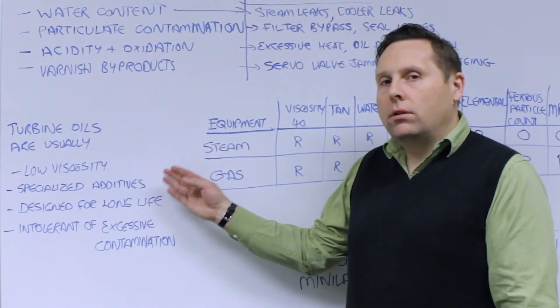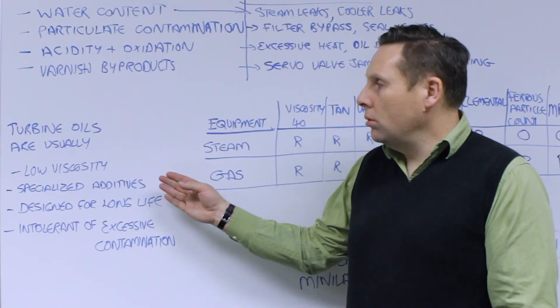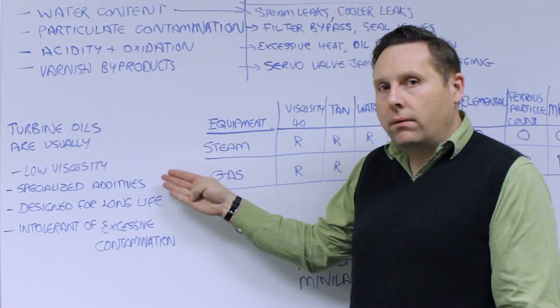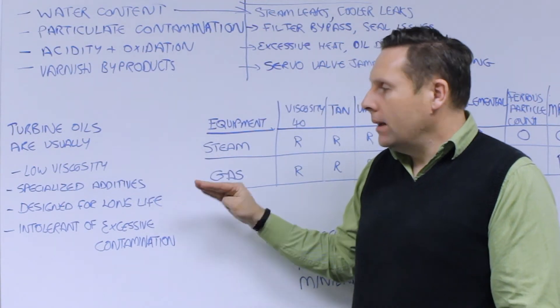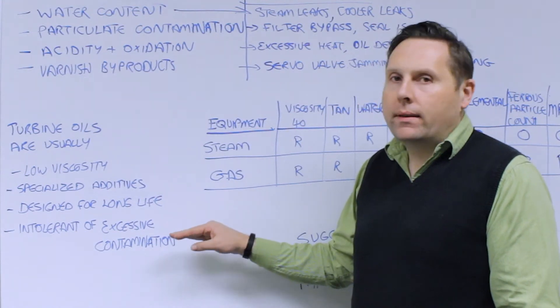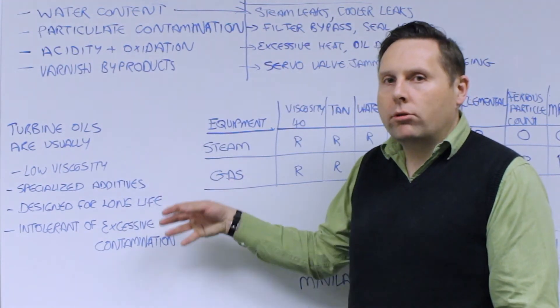The turbine oils that are usually API Group 2 or Group 2 Plus are typically low viscosity. They have specialized additives, generally a low amount of additives. They're designed as we said for the long life and they're very intolerant of excessive contamination be that water or particulates.